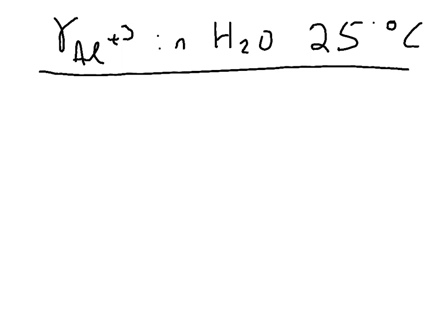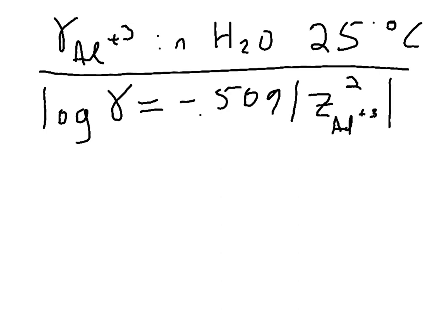So I'd say that log of gamma is equal to negative 0.509 because we're working at water 25 degree C. The charge on the aluminum, since that's the one we're trying to find activity coefficient for, is equal to 3 squared times the square root of the ionic strength.